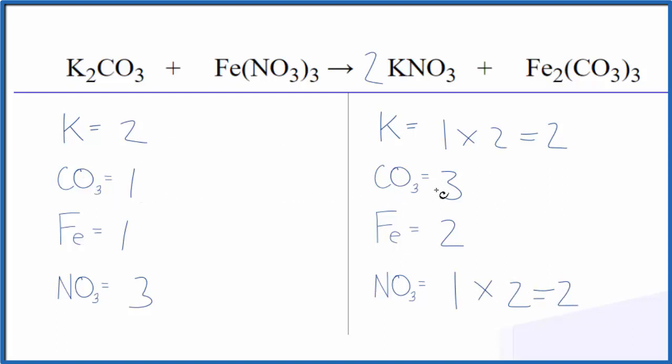How about we do the carbonates now? We have three and one. Let's put a three in front of the potassium carbonate. So that does change our potassiums—two times three gives us six of those. But one carbonate times three, now we have three of those. Those are balanced.